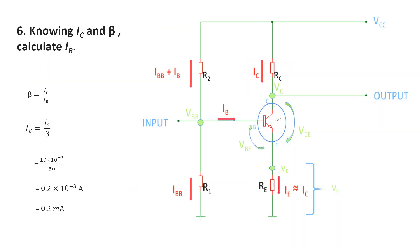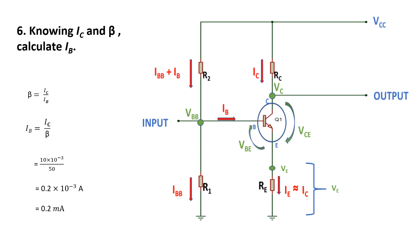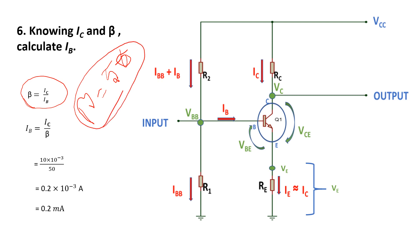Step number six: we know from the equation that beta equals collector current divided by base current — this is the very basic equation. As we know, the transistor beta equals 50 in this example. You can find the value for beta from the datasheet. From this equation you can get the base current, which in this case is 0.2 milliampere.